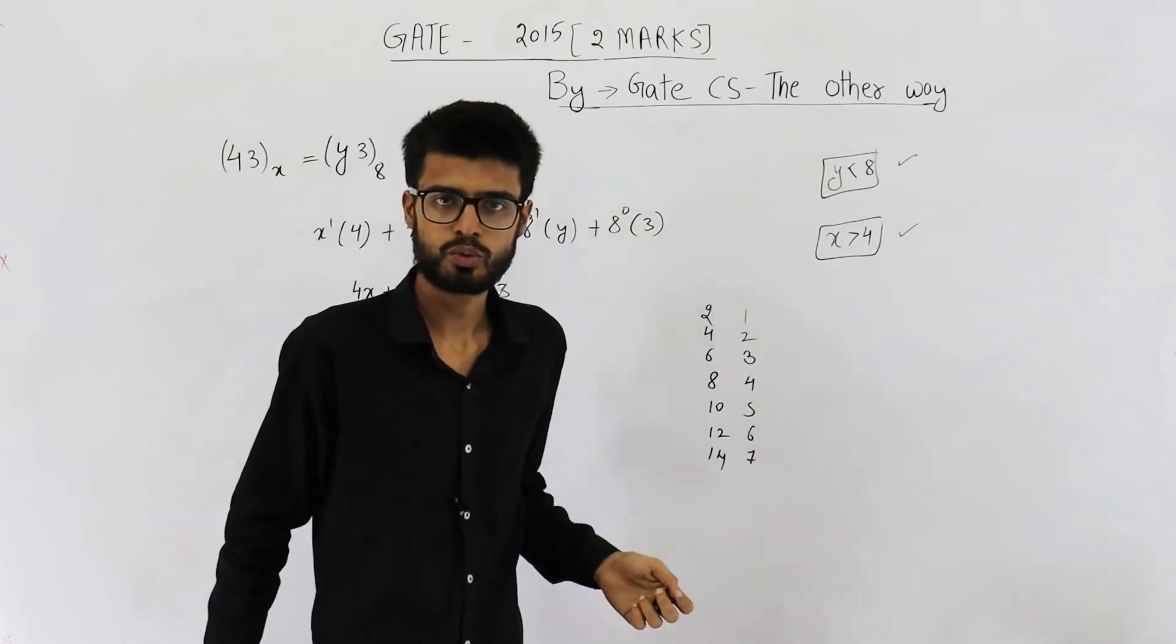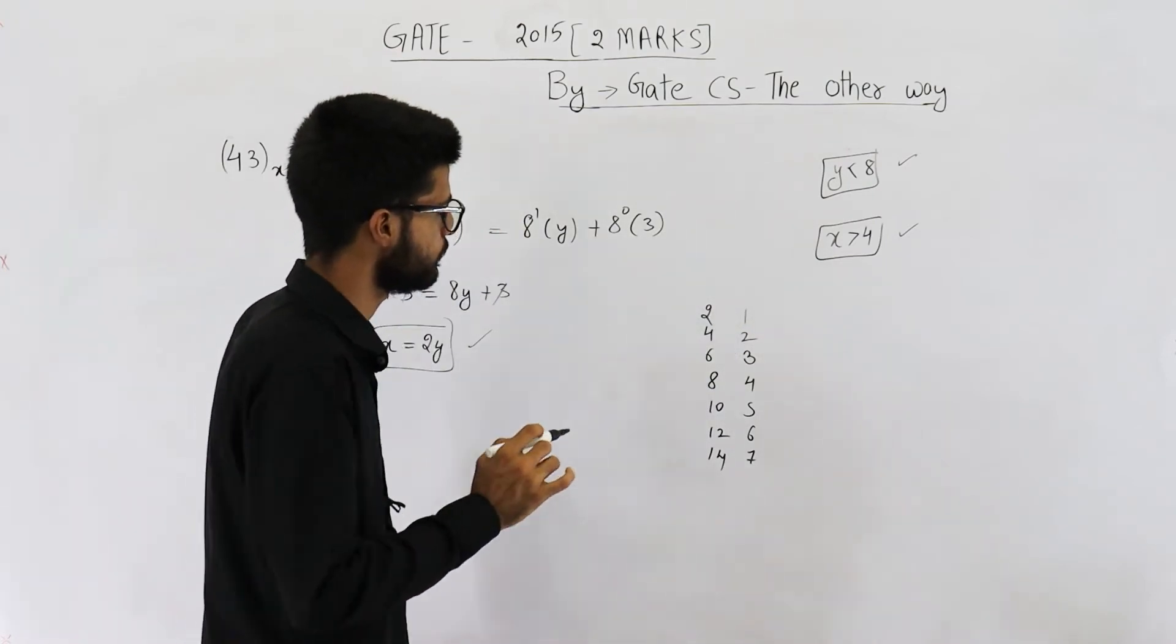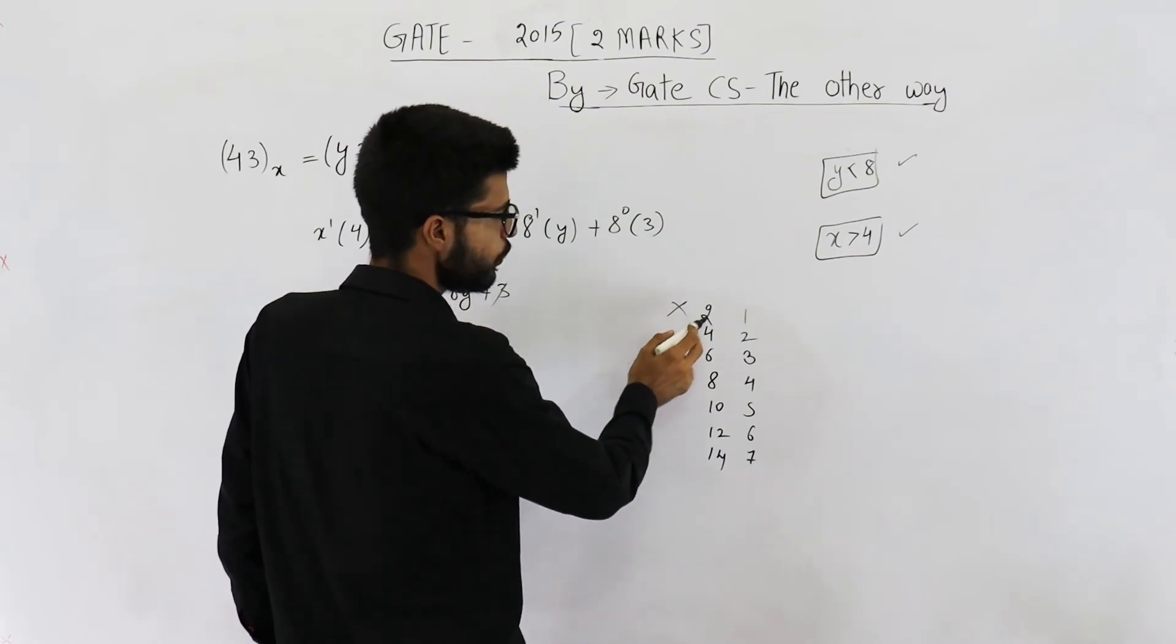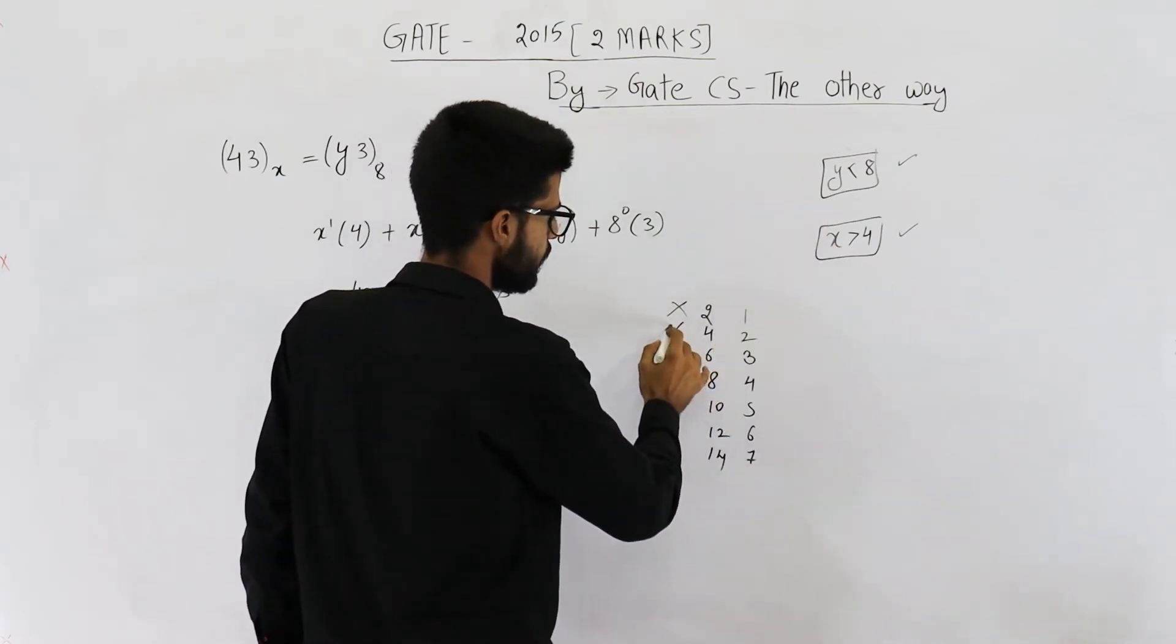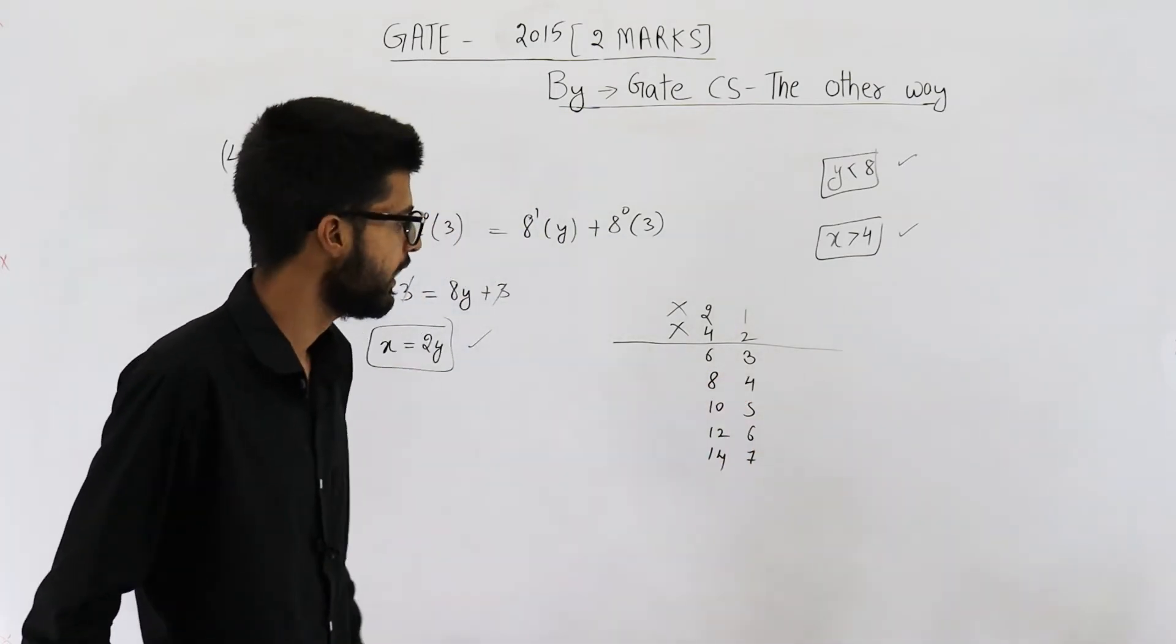According to this equation and this inequality, these are the possible values. Now let us consider this one also. They are saying x must be greater than 4. x is 2, this one is rejected. x is 4, but x must be greater than 4, this one is also rejected. So these are the possible values of x and y.